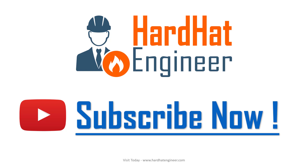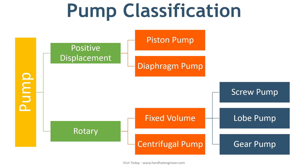Before discussing the types of centrifugal pumps, I will show you how a pump in general is classified to understand the whole concept easily. This chart broadly classifies pumps into two categories: rotary and positive displacement. Under positive displacement, piston type and diaphragm type are widely used. Under rotary type, you can further classify pumps into fixed volume pumps such as gear and lobe, and the biggest category, centrifugal pump.